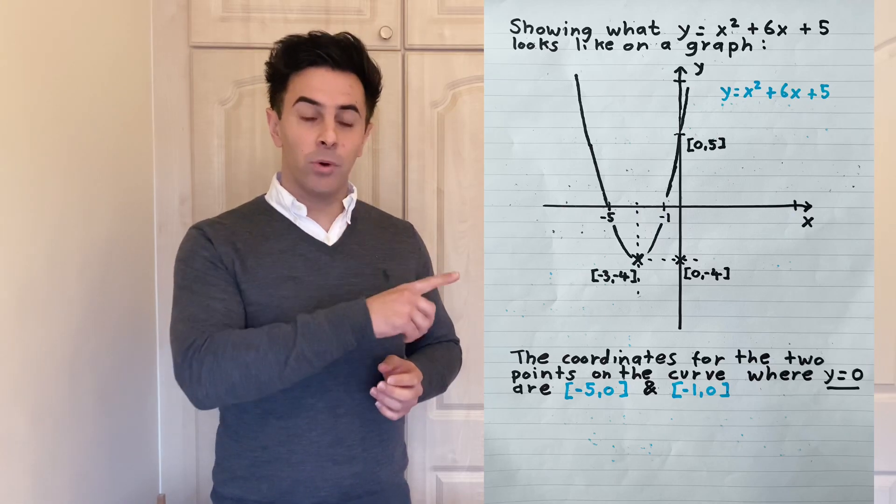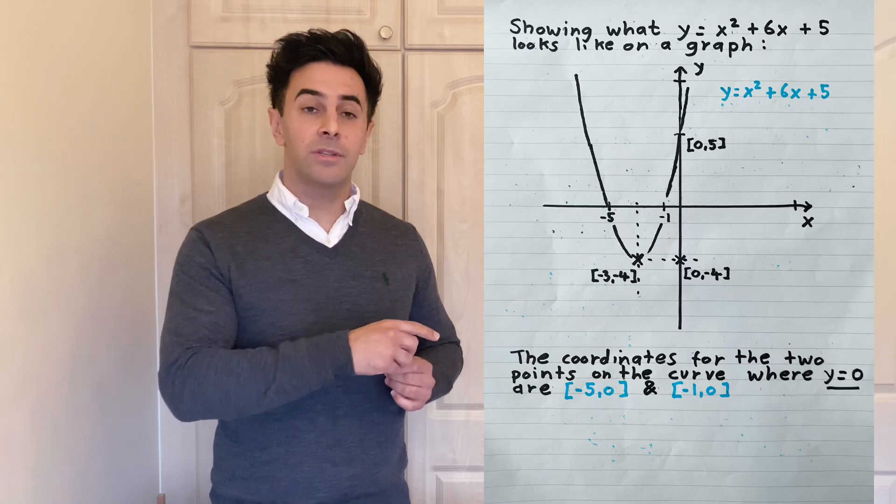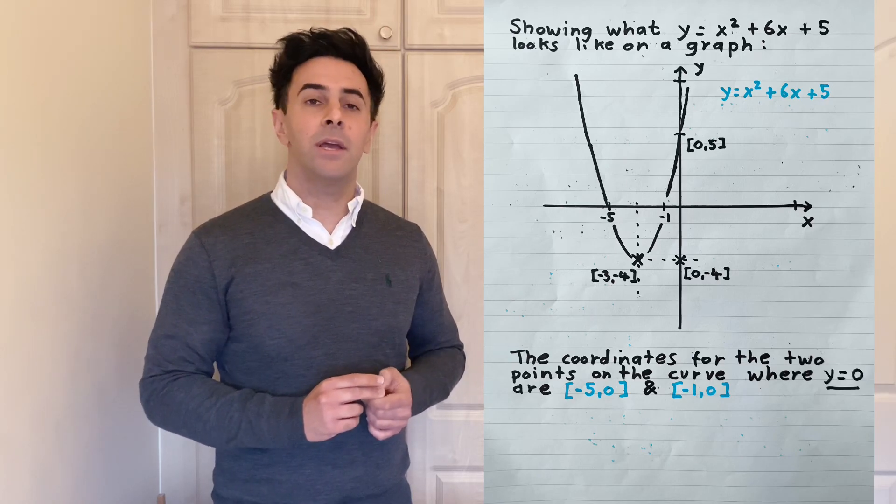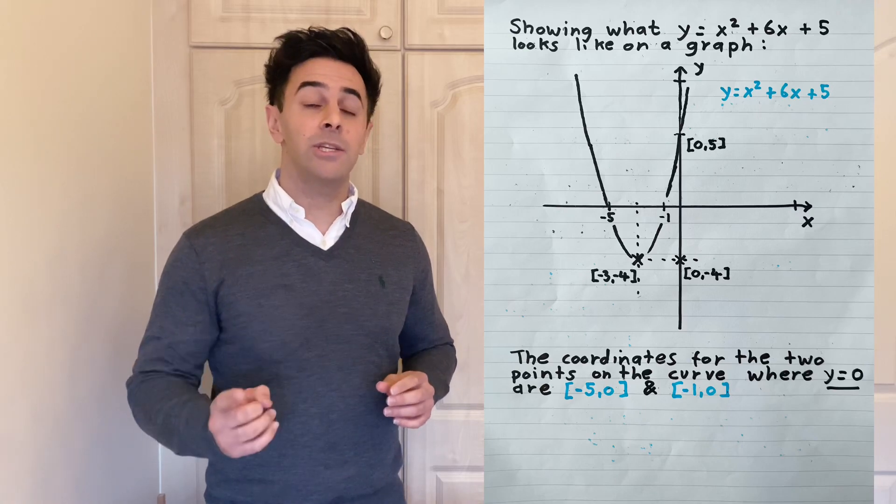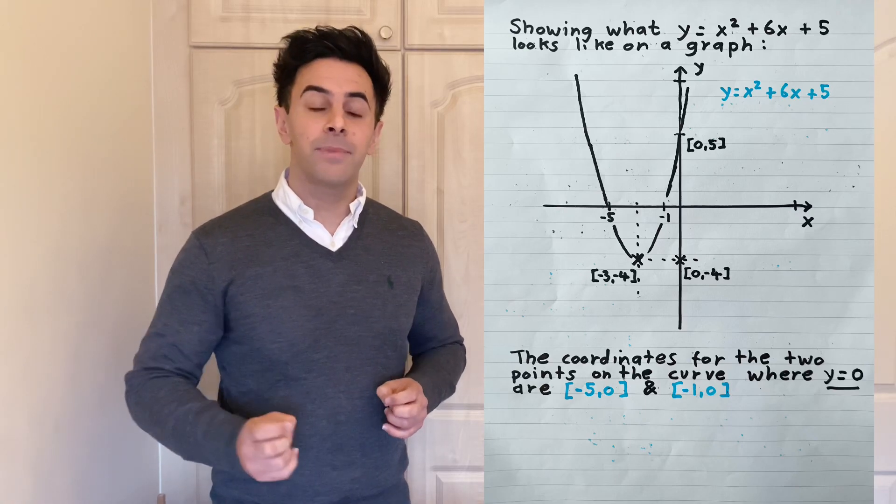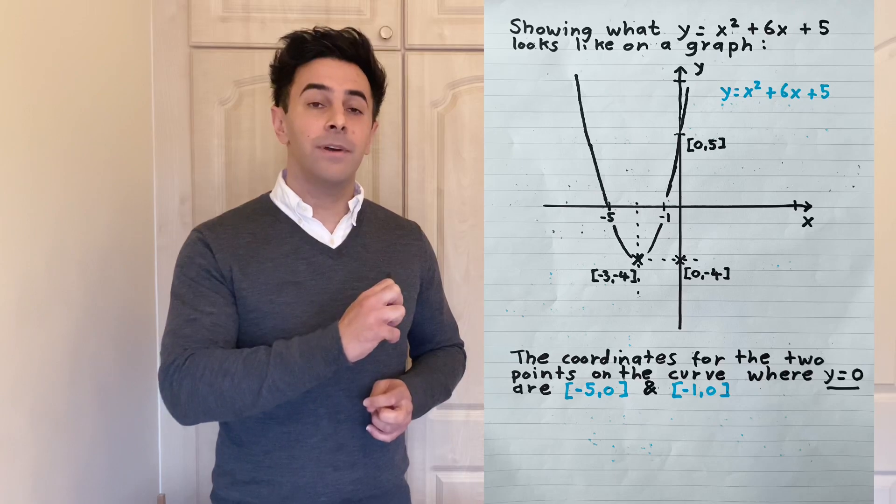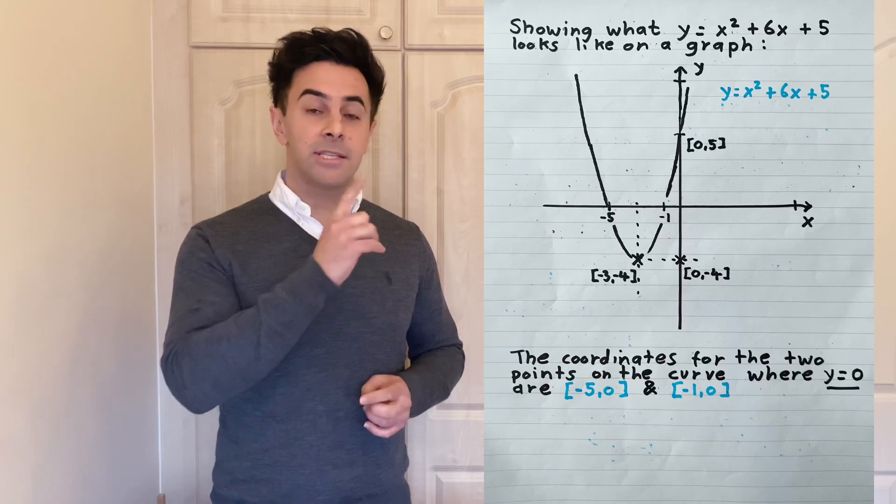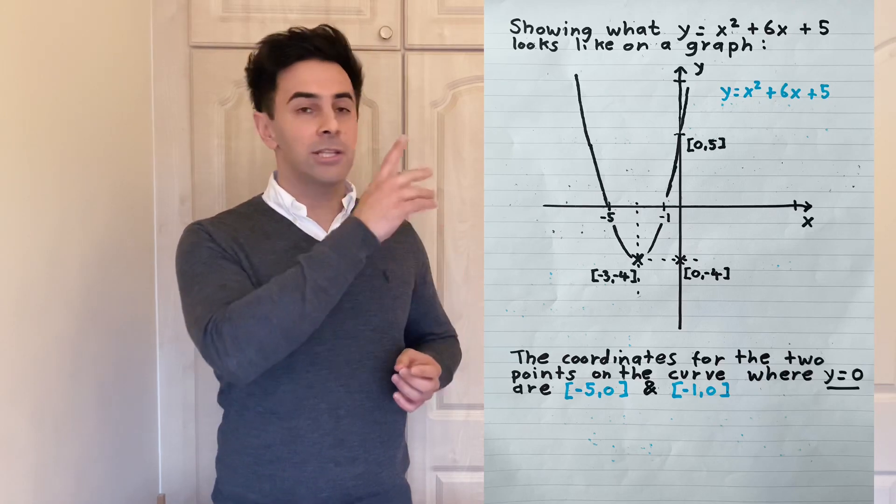The lowest point you'll see here, which has the coordinates minus 3, minus 4, you can find by using a technique in calculus called differentiation, which we might look at a bit later on. We find the gradient in the graph at the lowest point, which is 0 as for a parabola here, and that is the low point.